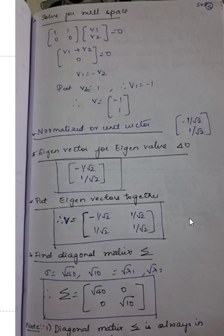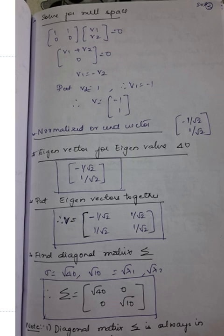Now let us find sigma. Sigma is the diagonal matrix formed by taking the square roots of the eigenvalues: √40 and √10. The diagonal matrix must be in descending order — highest first. So sigma has √40 as the first entry, then √10, with the off-diagonal entries as zeros. This is your second decomposition.